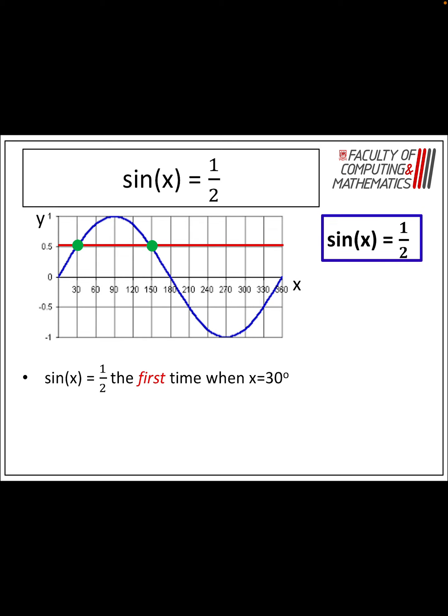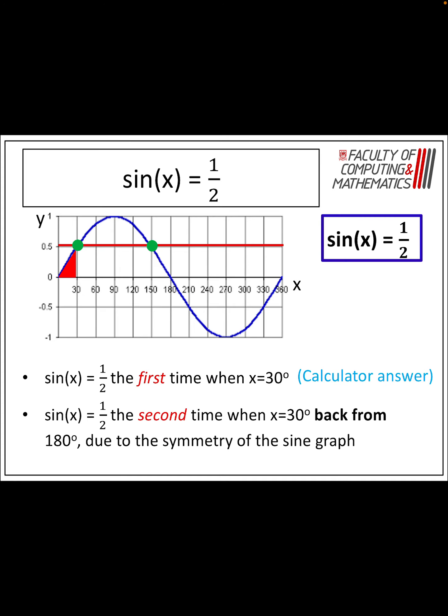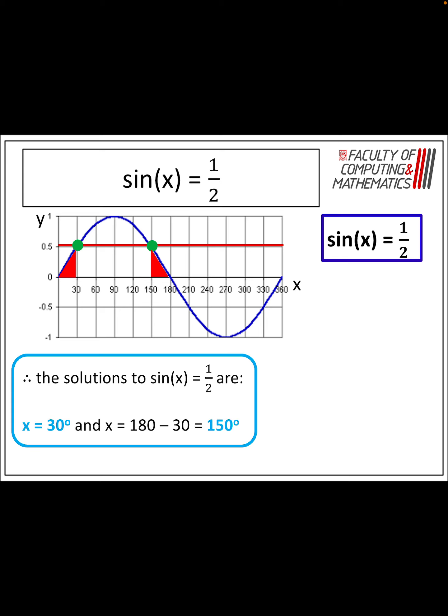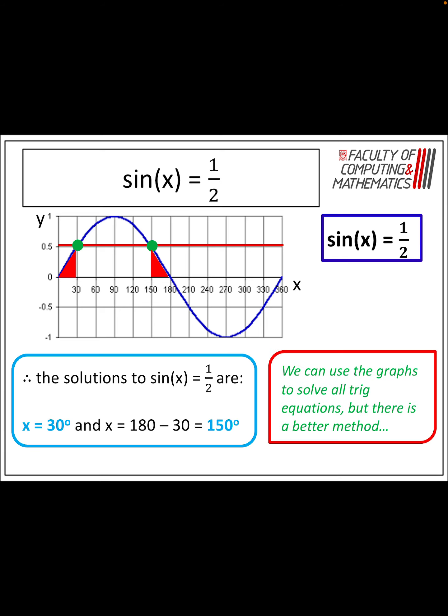So if the first one's 30, we use the symmetry of the graph and go back from 180 degrees. If we do 180 minus that 30 degrees, we get 150 degrees. So our two solutions for sine x is equal to a half are 30 degrees and 150 degrees. But we don't want to have to draw out the graph every single time, so there is an alternative method — that's where our CAST diagram comes in.